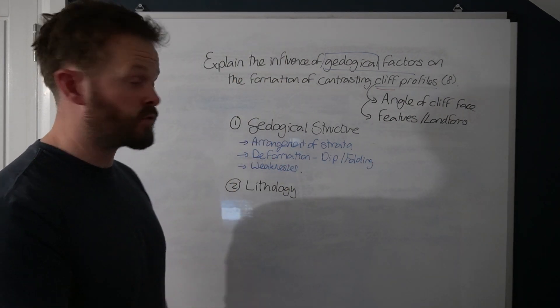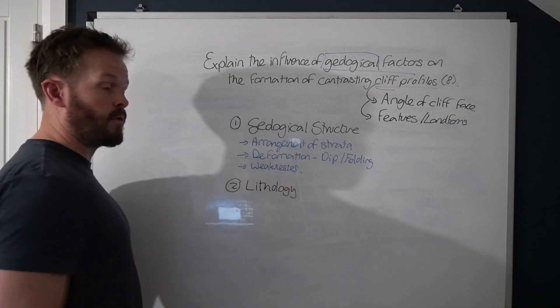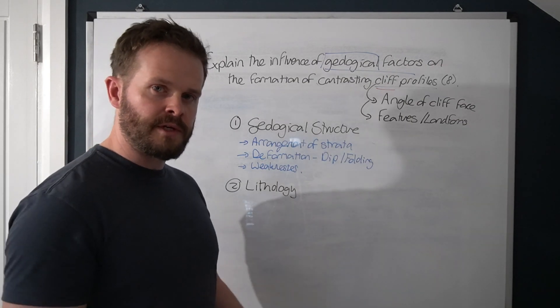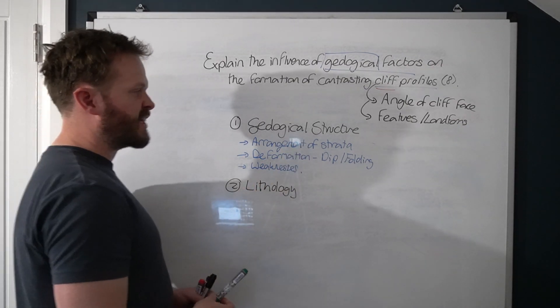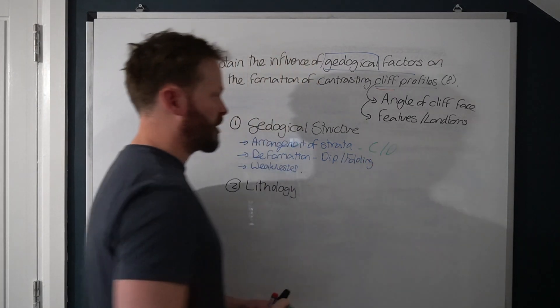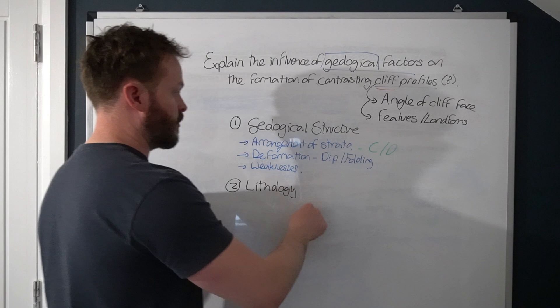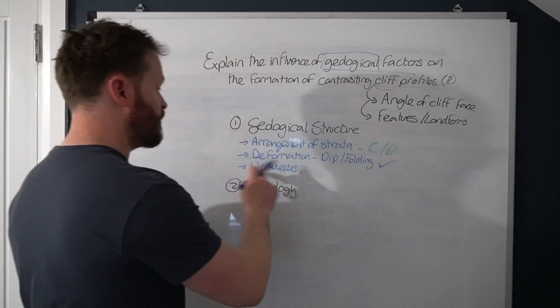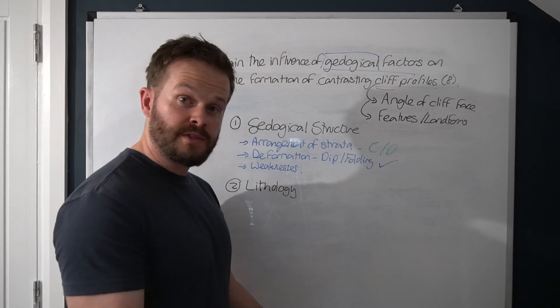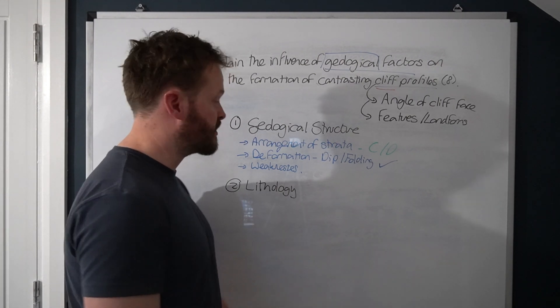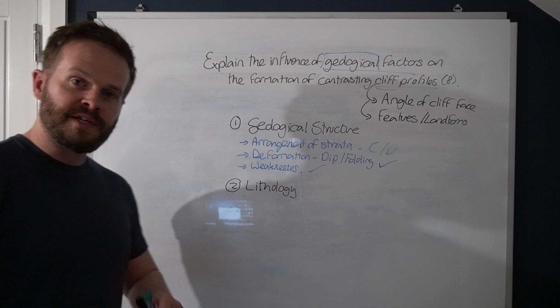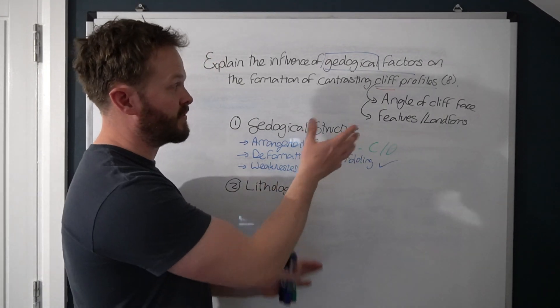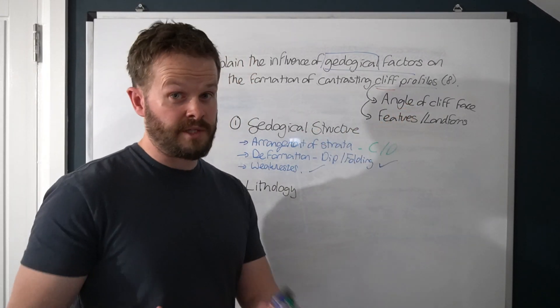So our three categories within geological structure, we've got the arrangement of strata, we've got deformation like your dip, your folding, and we've got weaknesses as well. So we need to determine which of these are going to be relevant to our question. Arrangements of strata, that's when we're talking about concordant and discordant coastlines, probably not relevant to this question. Deformation, dip, folding, that is definitely going to be relevant to our question. Weaknesses, presence of weaknesses, things like joints, fissures, possibly even faults. We're definitely putting that in. So as you can see, geological structure can, I think we're already starting to formulate our plan here. Geological structure will have an influence on either the angle of the cliff face or features and landforms that we will see in that cliff face.